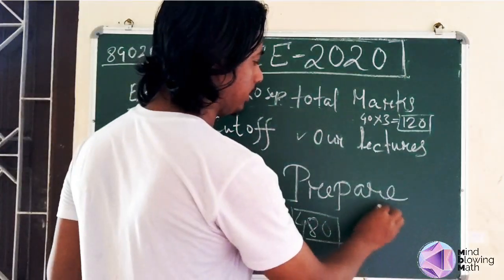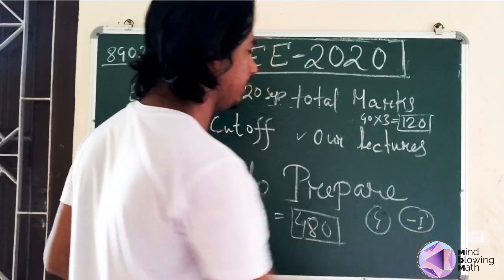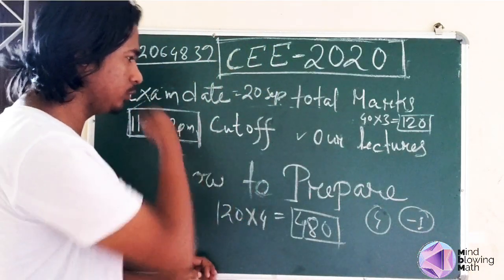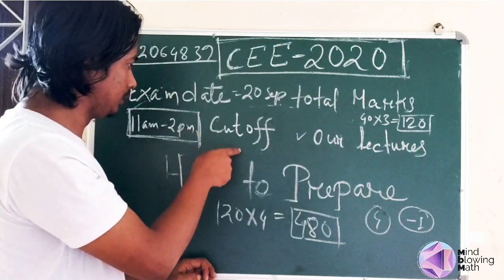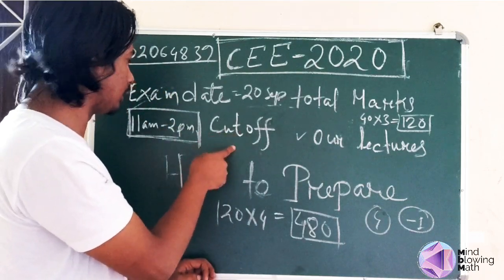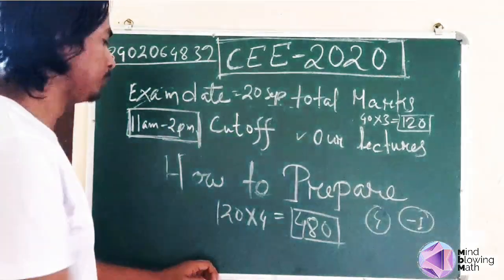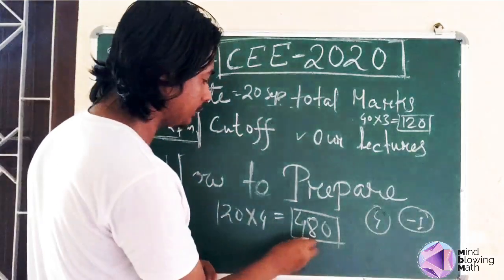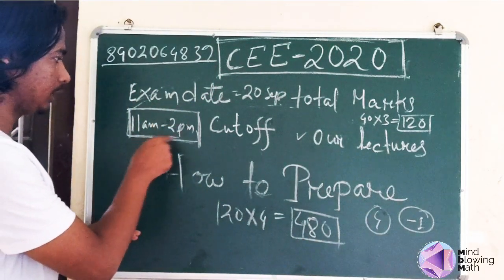4 marks per correct answer and negative 1 mark per wrong answer. This is important: the exam is 480 marks total and the exam time is 3 hours.